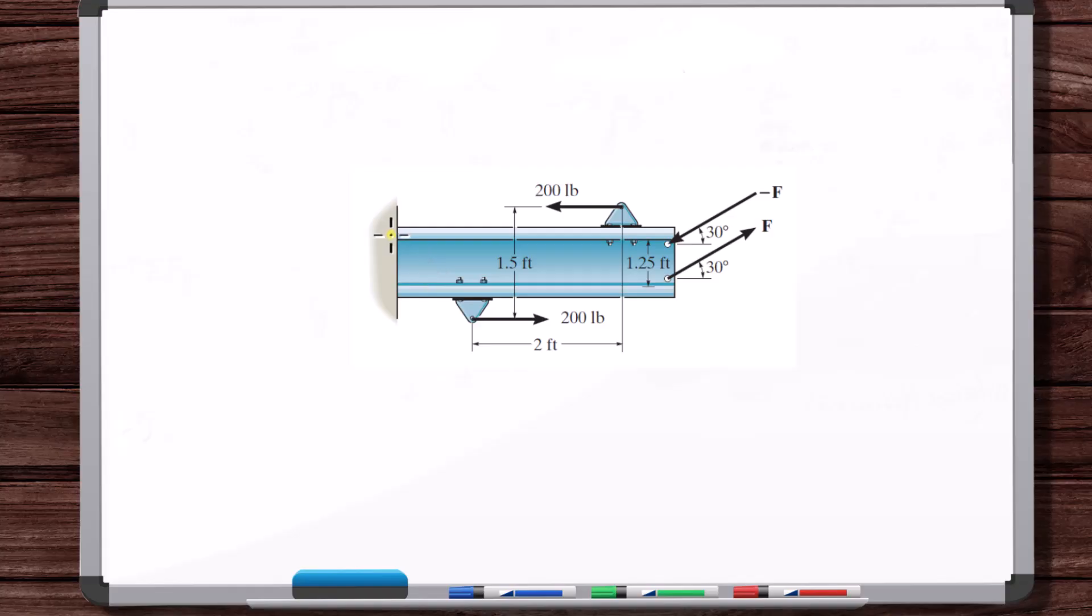and you can apply those couple moments anywhere you want on the beam, and from a rigid body mechanics, static analysis standpoint, it doesn't change the problem. In other words, when you solve for, say, the reaction forces in the wall, the moments, the shear and the normal forces in the wall, you're going to get the exact same answer,